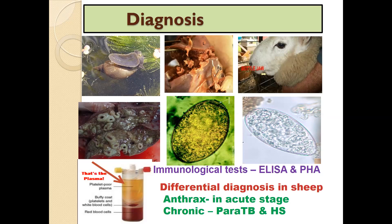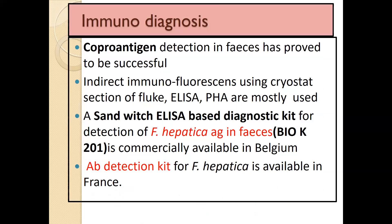Serological examinations like ELISA test and passive hemagglutination test are used for diagnosis. In sheep, the acute form should be differentially diagnosed from anthrax, and the chronic form should be differentiated from paratuberculosis and Johne's disease. Immunodiagnosis may be achieved by detecting circulating antigens using defined antigens and monoclonal antibodies. Coproantigen detection in feces has proved more successful nowadays, along with indirect immunofluorescence tests, ELISA, and passive hemagglutination tests.